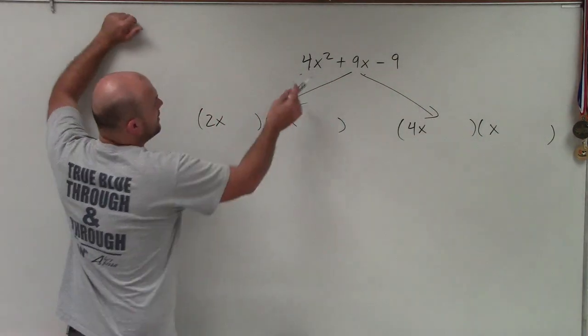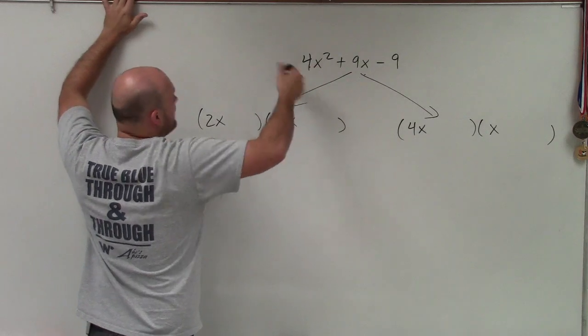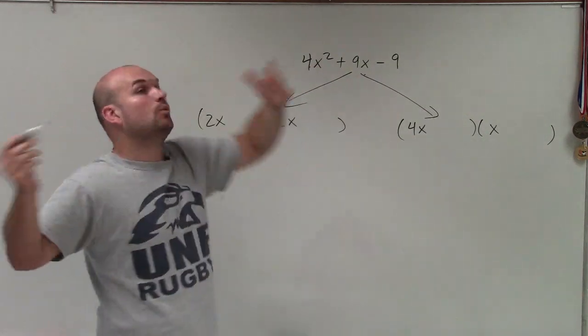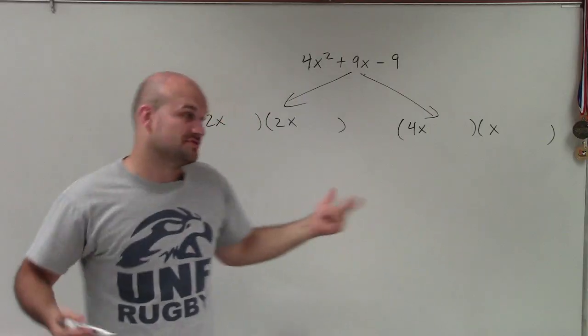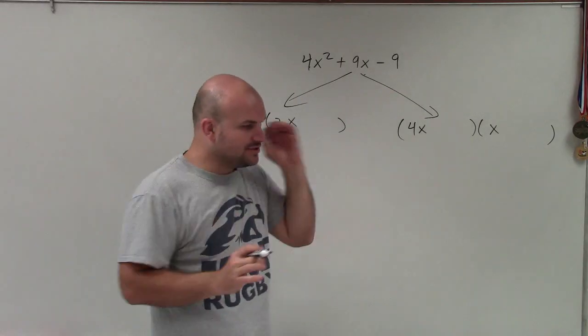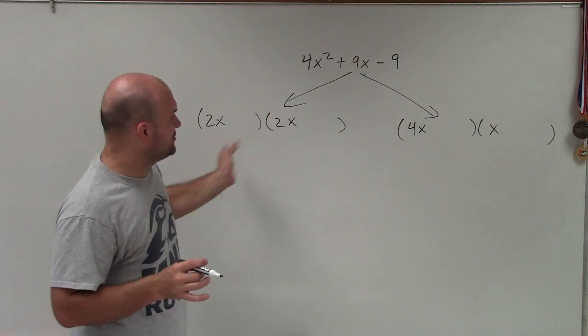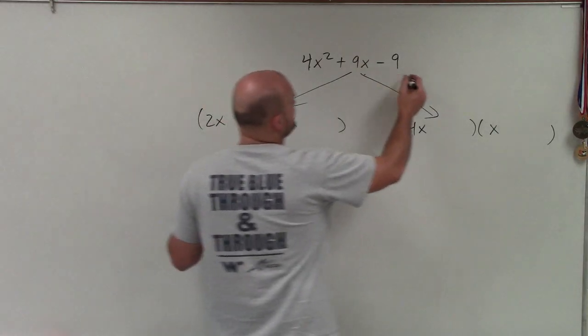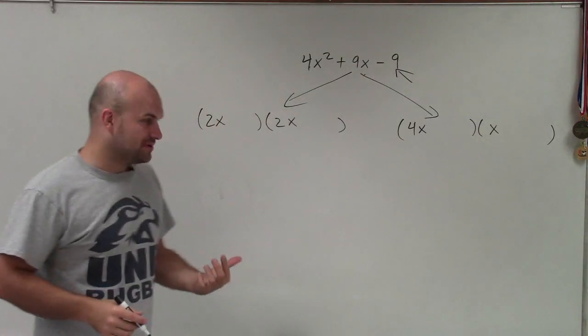If you have any other number in front, say like 12, you'd have a lot of different options. So mentally, these two numbers have to multiply to give me 4x squared. And remember, they also have to multiply to give me 9, these last two numbers.